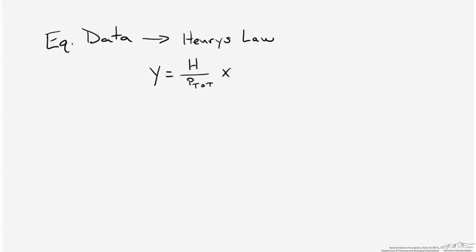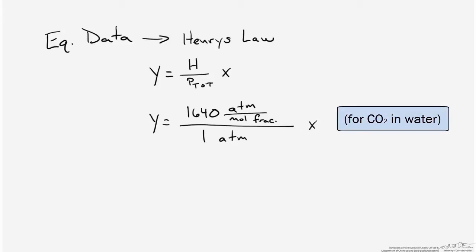For an absorber we're going to use equilibrium data derived from Henry's Law. Henry's Law states that the mole fraction in the gas phase equals the Henry's Law constant divided by the total pressure, multiplied by the mole fraction in the liquid stream. For our particular situation I looked up the Henry's Law constant for this system in terms of atmospheres per mole fraction, and the total system pressure given in the problem statement is 1 atmosphere. So we know a way of relating gas phase and liquid phase mole fractions, related simply by the number 1640.